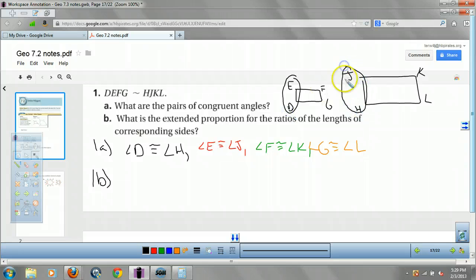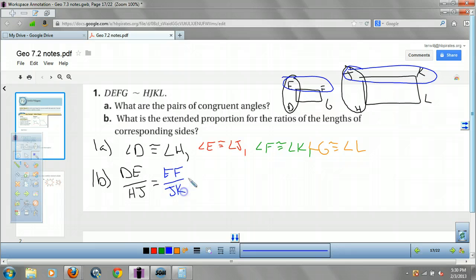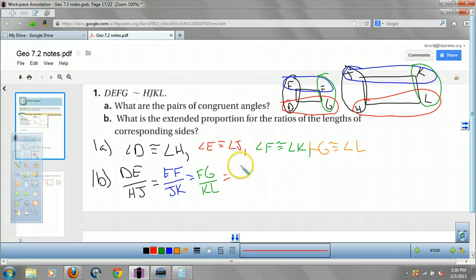This is where I'm going to use my picture. DE matches up with JH, or D, E with H, J. And I usually always do the little one on top just because that way I'm consistent. EF matches up with J, K. FG matches with K, L. And last but not least, DG or GD matches with HL.